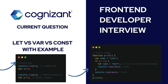Now I've changed both to var. You can see both values will change because we don't have block scope for var. While talking about const, it will have the same block-level scope, but the difference between let and const is that const has to be initialized with a value.